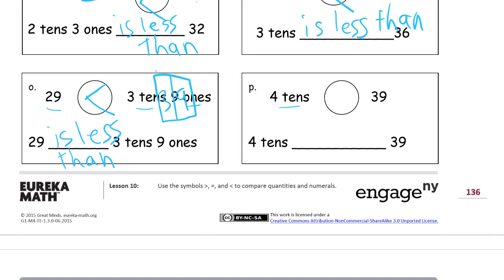4 tens is 40. 10, 20, 30, 40. And 40 is more than 39, so the alligator's going to eat the 40. 4 tens is greater than 39.